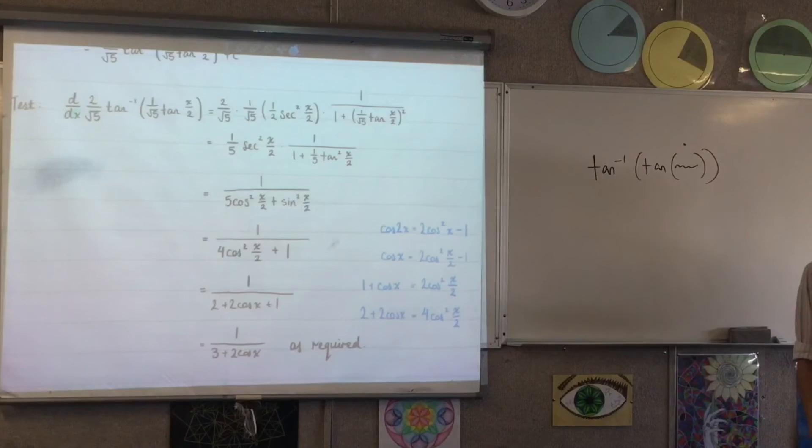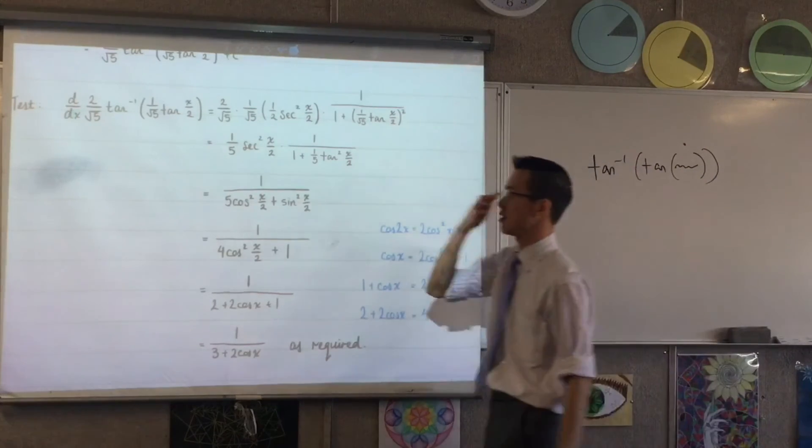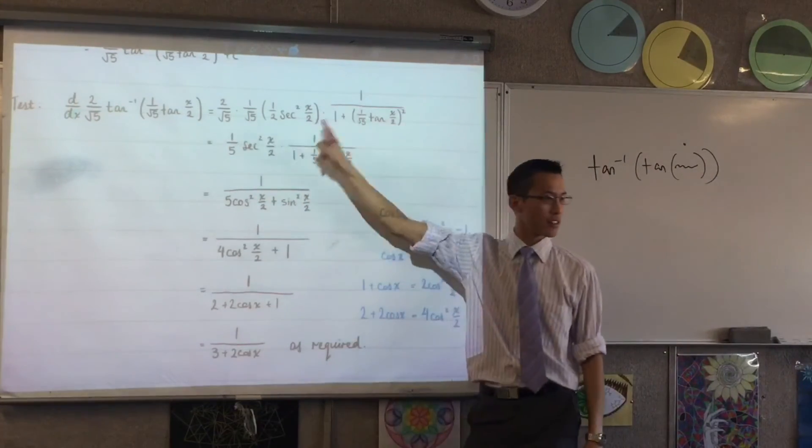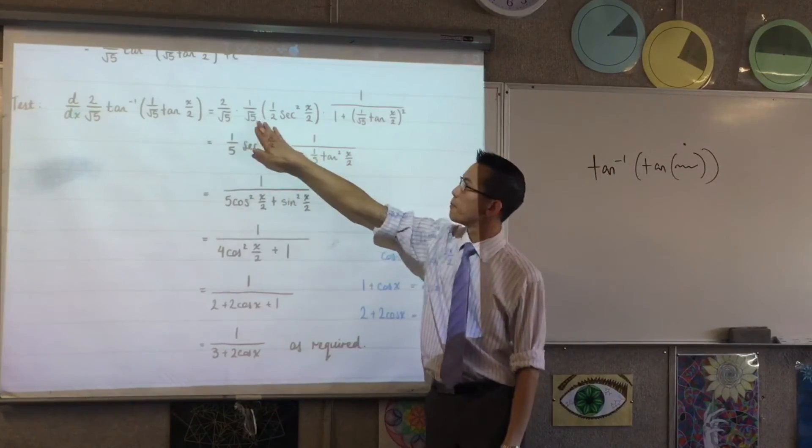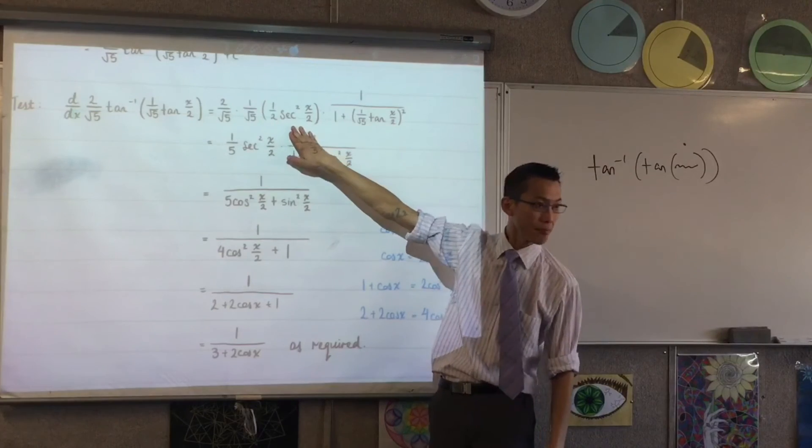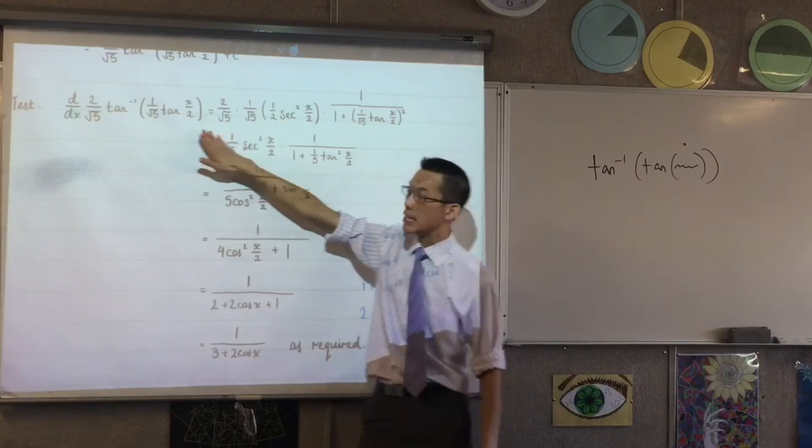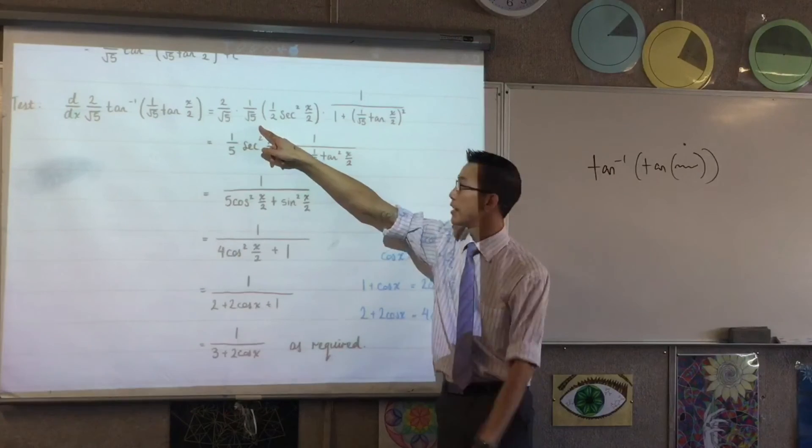It's worthwhile just to flex your differentiation muscles, especially when you look at this. Do you see how I've strung this together? There's that 2 on root 5 that came out the front. What does this part represent? That's the derivative of the inside function, which has the 1 on root 5 just hanging out there.